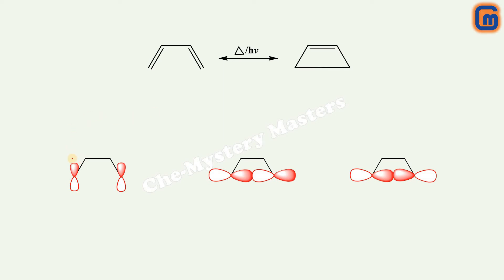Due to rotation of these orbitals, two types of arrangement can be obtained. In the first case, if I rotate both orbitals in the same direction — both rotating towards the right — we call this conrotation. In that case, this red or positive lobe goes inwards, and this negative or white lobe comes towards the left. Similarly for the other orbital, the red lobe goes outwards to the right and the white lobe comes inwards to the left. So you can see the two orbitals interacting with each other are of opposite kinds.